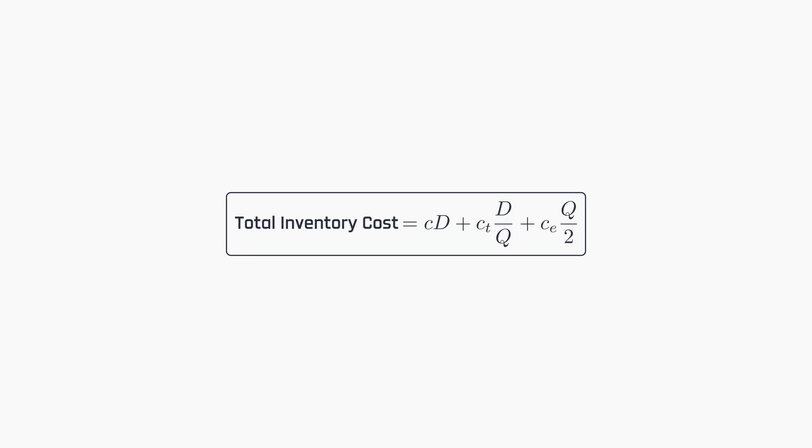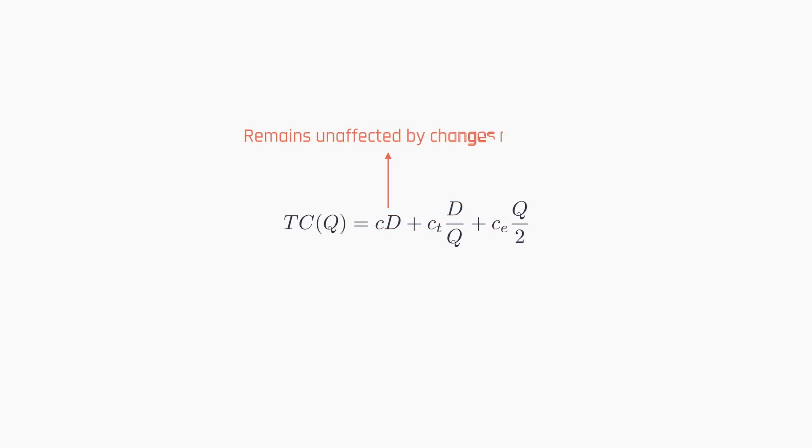So let's continue with the total inventory cost expression. If we consider the individual costs and the demand as known parameters, and the order quantity Q as a variable, then the total cost of inventory is a function of Q. Note that the material cost remains unaffected by changes in Q, and can be seen as a fixed cost in this regard. So, for the purpose of our analysis, we can exclude the material cost and focus solely on the costs that are relevant and influenced by Q. This leads us to the formulation of the total relevant cost expression.